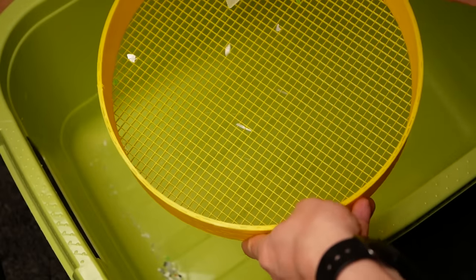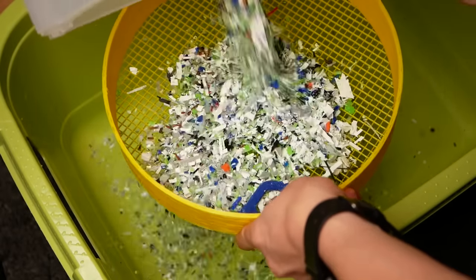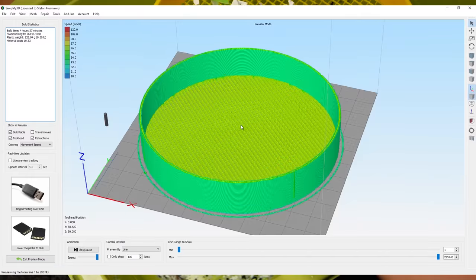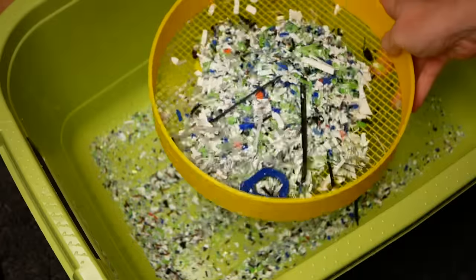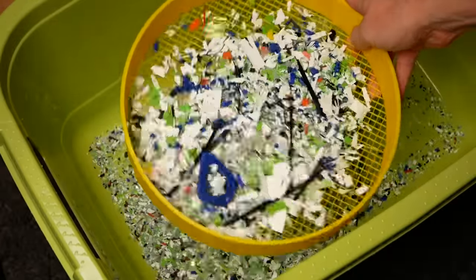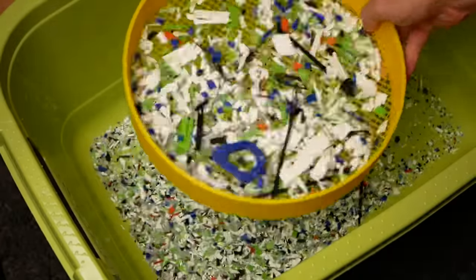The material is now run through a sieve that I 3D printed by using no top and bottom layers and only adjusting the infill density to a point that the mesh size was around 5mm. Everything that's too big goes back into the mixer.